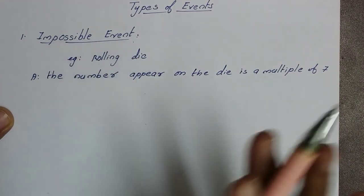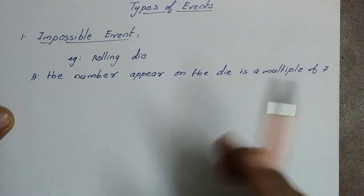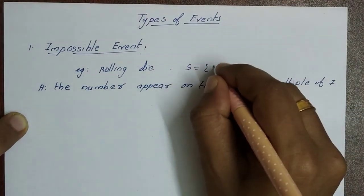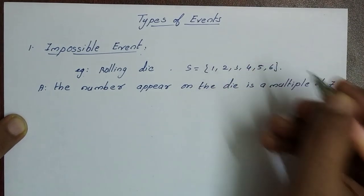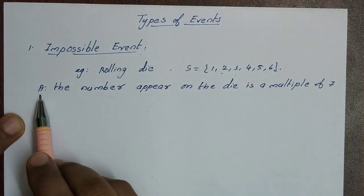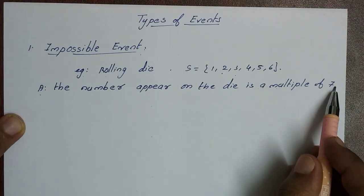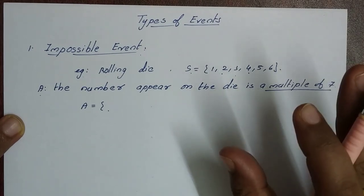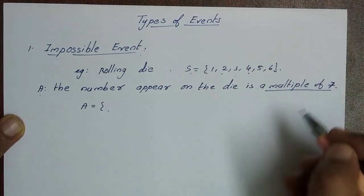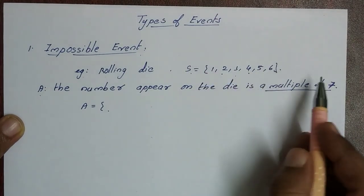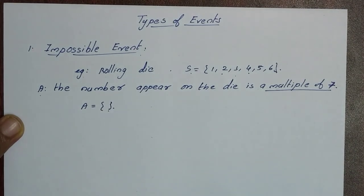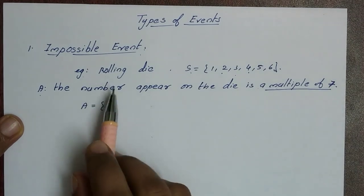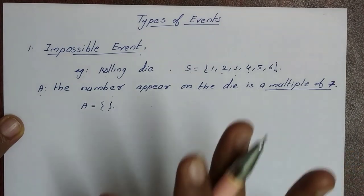The first type of event is the impossible event. For example, rolling a die — the sample space is {1, 2, 3, 4, 5, 6}. If we take event A: the number that appears on the die is a multiple of 7. When we roll the die, no number is a multiple of 7 among 1 through 6. So there is no possibility — this type of event is called an impossible event. That is, it will not happen.